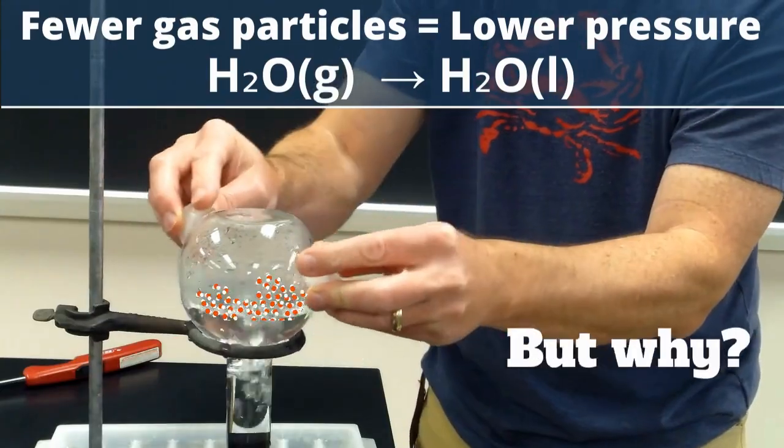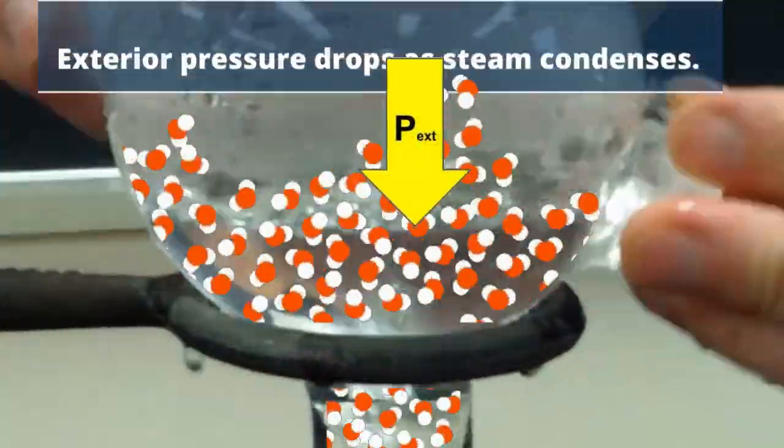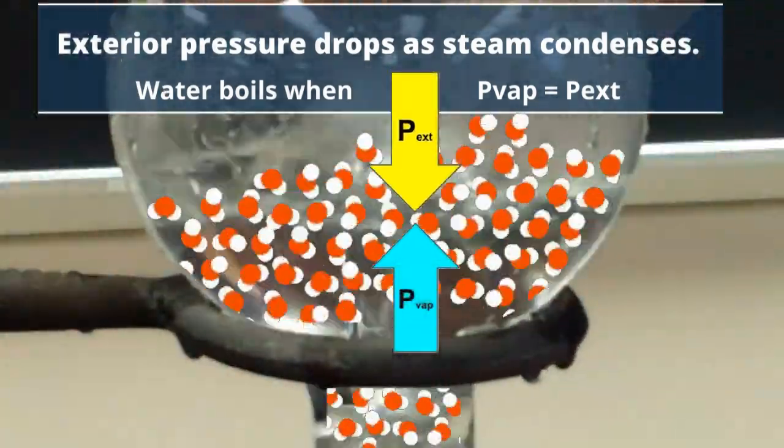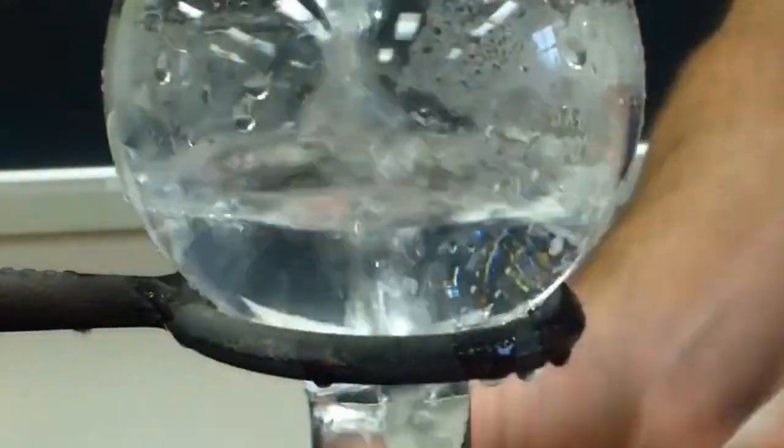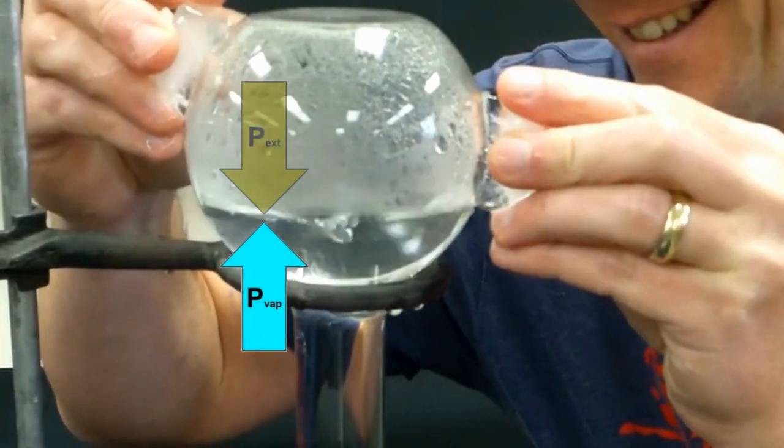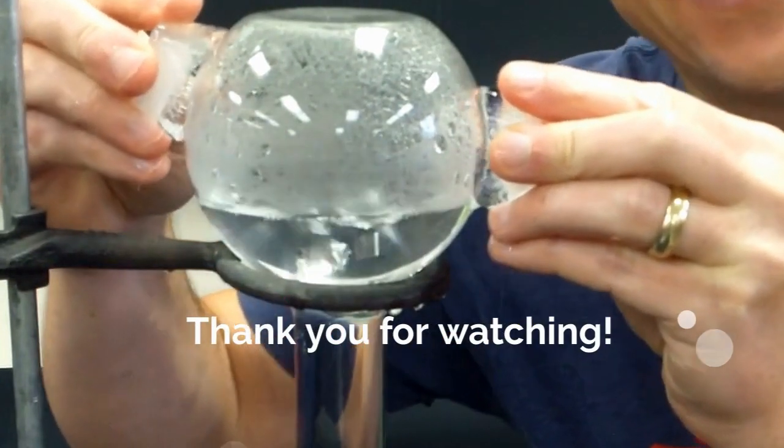This makes the water boil, but why? The decrease in gas particles means the external pressure will drop. The water will boil when its internal vapor pressure matches the external pressure of the steam. That is how you boil water with ice.